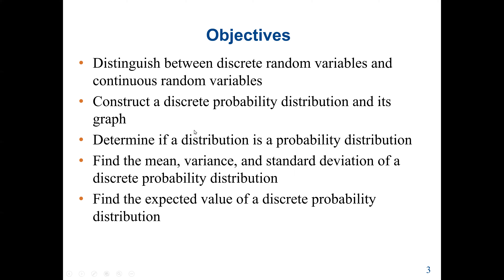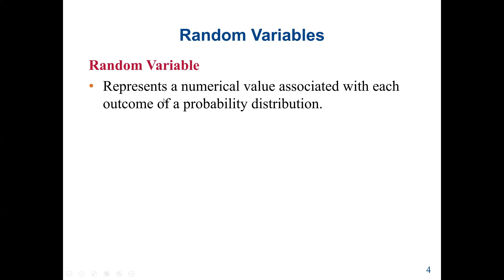A random variable represents a numerical value associated with each outcome of a probability distribution. For example, if Delta Airlines has 20 total flights from JFK to London, we can ask: what is the probability that 15 of these flights will arrive on time? In this case, 15 is the random variable. Since we are counting the number of planes arriving on time, 15 is a discrete random variable.